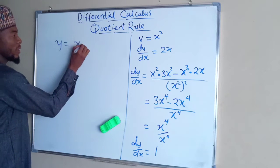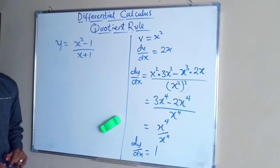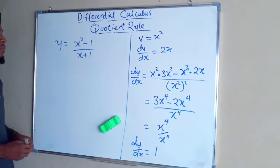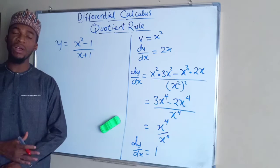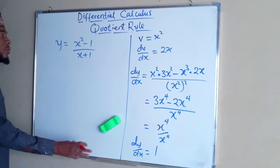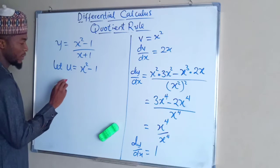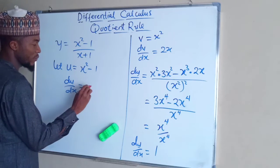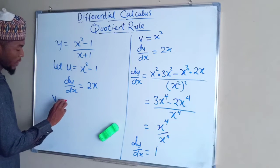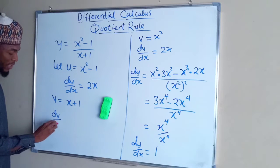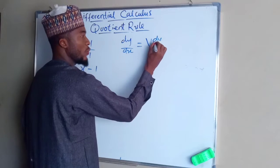Suppose y equals x squared minus 1, divided by x plus 1. No matter how small or large the degree of the exponent is, the methodology for solving remains the same. For the quotient rule, let u equal x squared minus 1, so du/dx equals 2x. Let v equal x plus 1, so dv/dx equals 1. Then dy/dx equals v times du/dx minus u times dv/dx, divided by v squared.